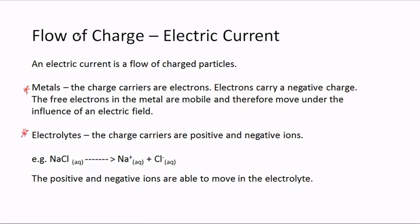An electrolyte is a solution containing ions; the charge carriers are positive and negative ions. The positive and negative ions are able to move in the electrolyte. When sodium chloride is dissolved in water we produce Na⁺ ions and Cl⁻ ions. Because these particles are charged and able to move in solution, the electrolyte is able to conduct an electric current.